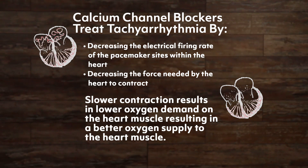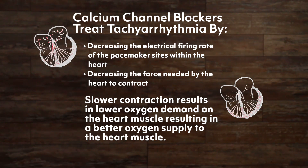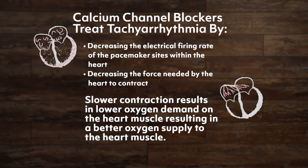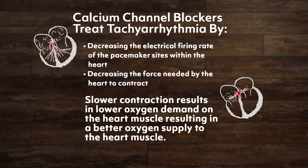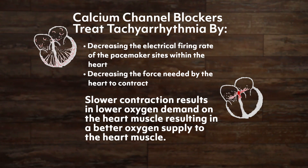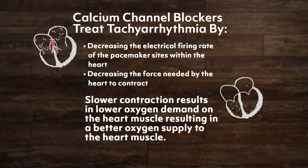Calcium channel blockers treat tachyarrhythmia by decreasing the electrical firing rate of the pacemaker sites within the heart and decreasing the force needed by the heart to contract. Slower contraction results in lower oxygen demand on the heart muscle, resulting in a better oxygen supply to the heart muscle.